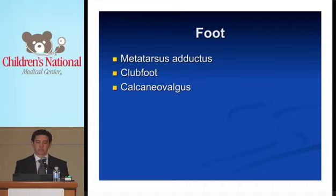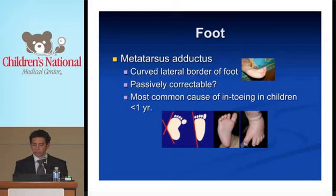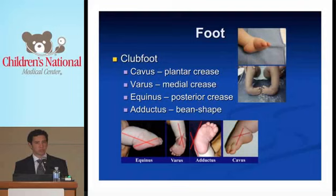A brief note on the foot. Multiple deformities are seen in younger children: metatarsus adductus, club foot, and calcaneovalgus. Metatarsus adductus is identified by a curved lateral border of the foot — you want to see if it's passively correctable. It is the most common cause of in-toeing in children less than one year of age. This is different from a club foot, which involves a complex set of deformities: cavus with a plantar crease, varus with a medial crease, equinus in a tiptoe position with a posterior crease above the heel, and adductus — that bean or kidney-shaped foot. Club foot tends to be more rigid and not passively correctable.